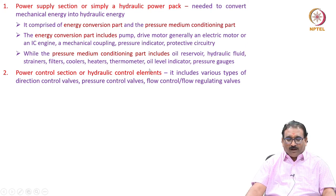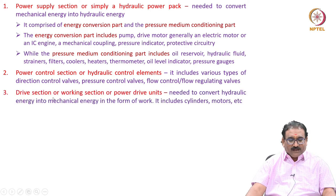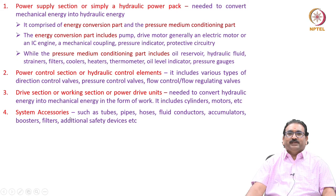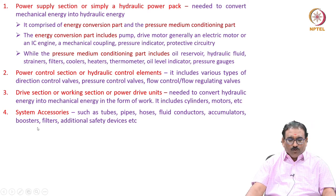The power control section or hydraulic control elements includes various types of direction control valves, pressure control valves, and flow control or flow regulating valves. The drive section, or working section, or power drive units, is needed to convert hydraulic energy into mechanical energy in the form of work. It includes cylinders and motors. System accessories include tubes, pipes, hoses, fluid conductors, accumulators, boosters, filters and many additional safety devices.